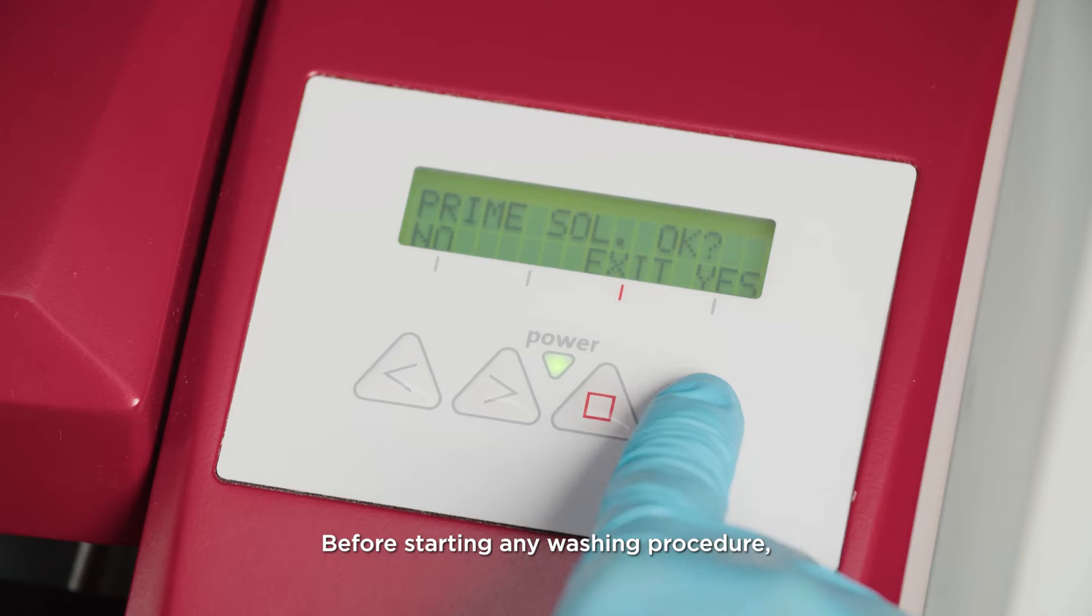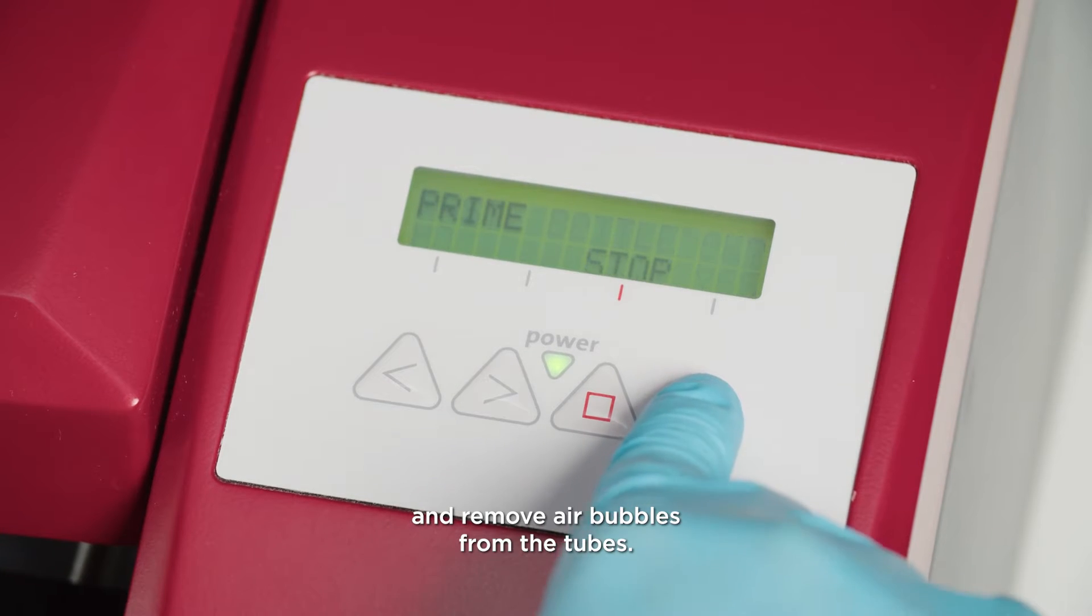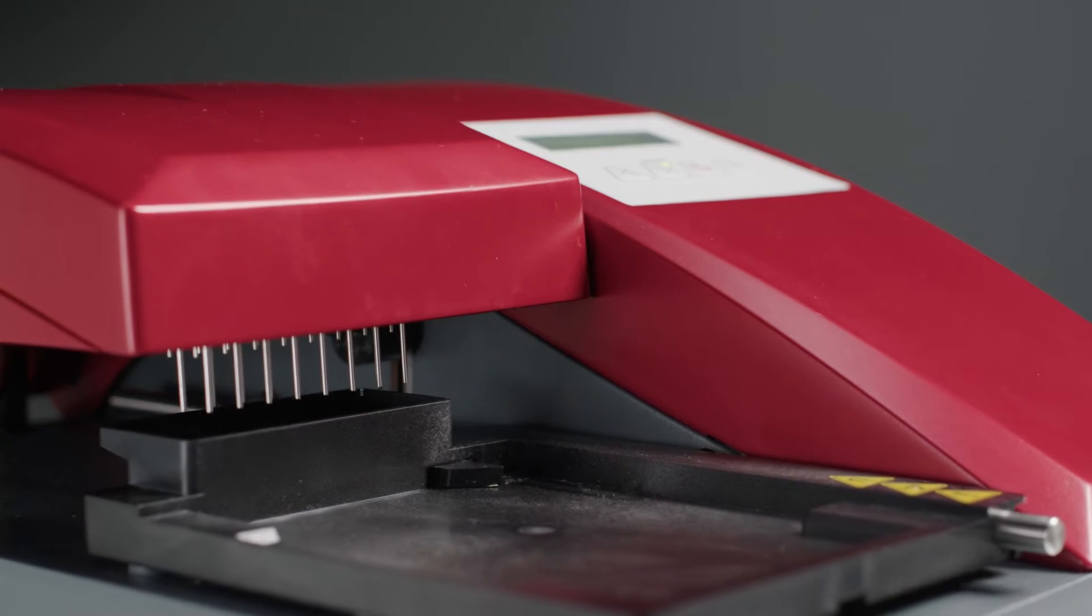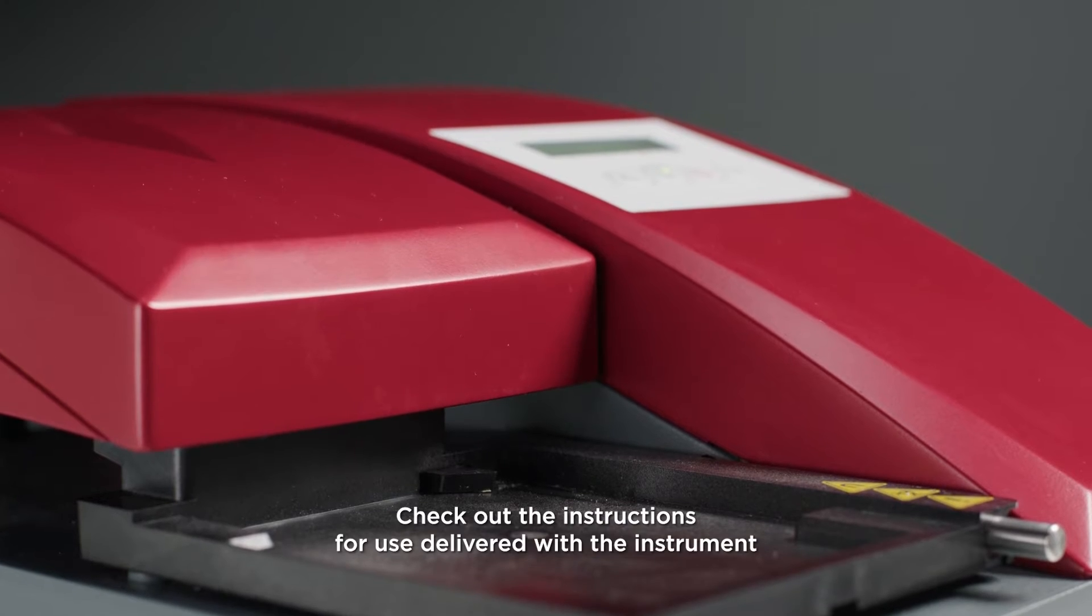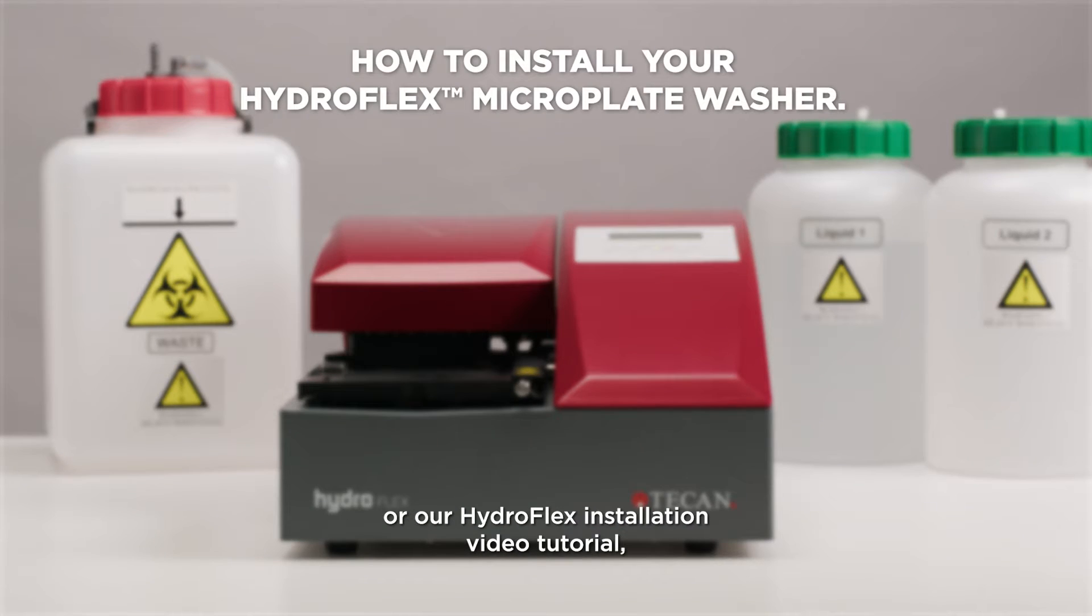Before starting any washing procedure, perform a prime procedure to fill the system with liquid and remove air bubbles from the tubes. Check out the instructions for use delivered with the instrument or our HydroFlex installation video tutorial if you do not know how to start a priming procedure.